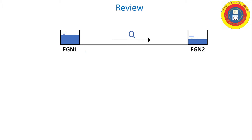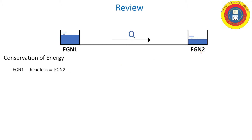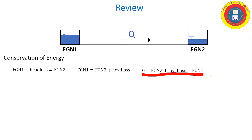Let's do a quick review. If we have two fixed-grade nodes connected by a pipe, the flow will be going from the high-energy node to the lower-energy node. Conservation of energy tells us that the energy in fixed-grade node 1 minus the head loss between the fixed-grades is what's left over in fixed-grade node 2. The Hardy Cross Method is a root-finding technique, so we're going to be setting this energy equation equal to zero and solving for the flow that satisfies that condition.